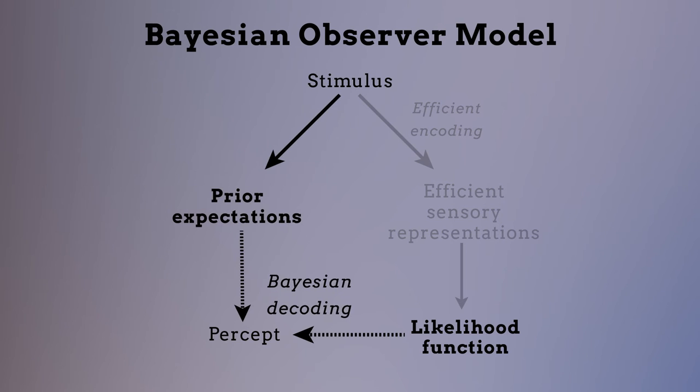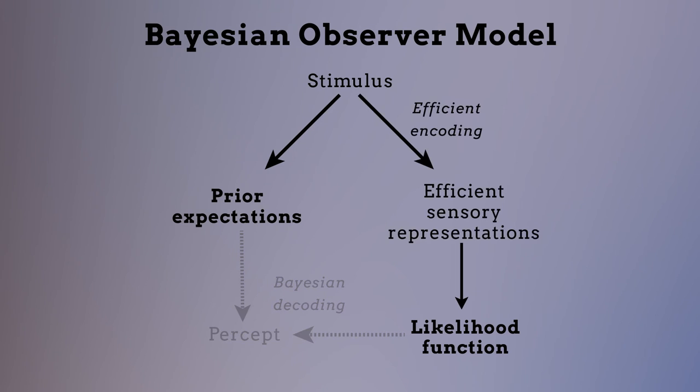On the other hand, Bayesian decoding implies that an observer's prior expectations are also based on the characteristics of natural stimuli. In the new model, the stimulus characteristics therefore determined how the sensory information was both encoded and decoded.